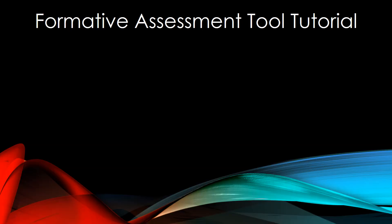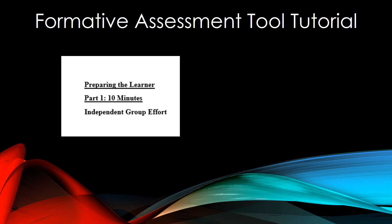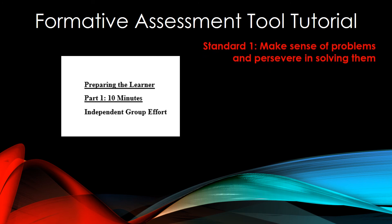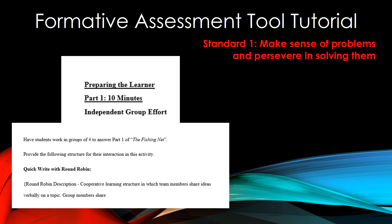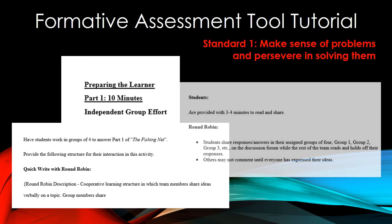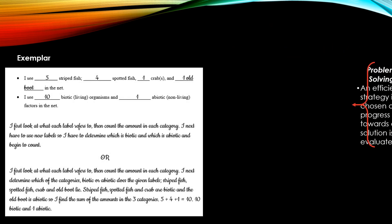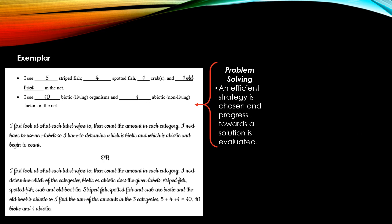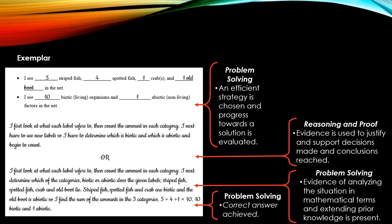Let us look at the formative assessment task. In part one, we will be assessing the student's ability to make sense of problems and persevere in solving them. We need to look at the information gathered in the round-robin discussion forum. In the exemplar response, there is evidence of an efficient strategy, the correct answer is achieved, there is analysis, and the student justifies and supports the decisions made and conclusions.